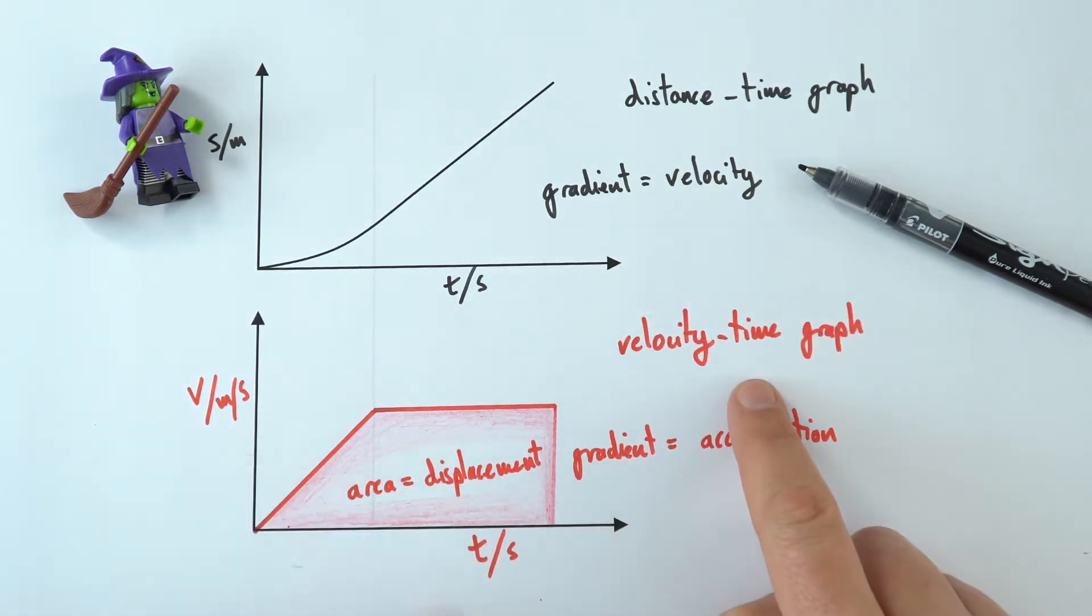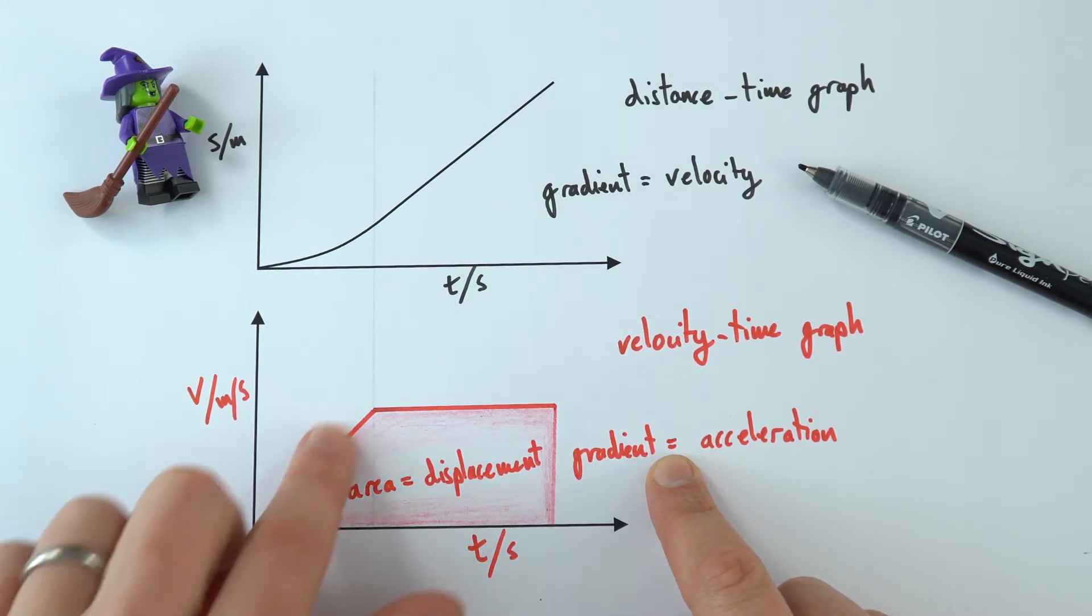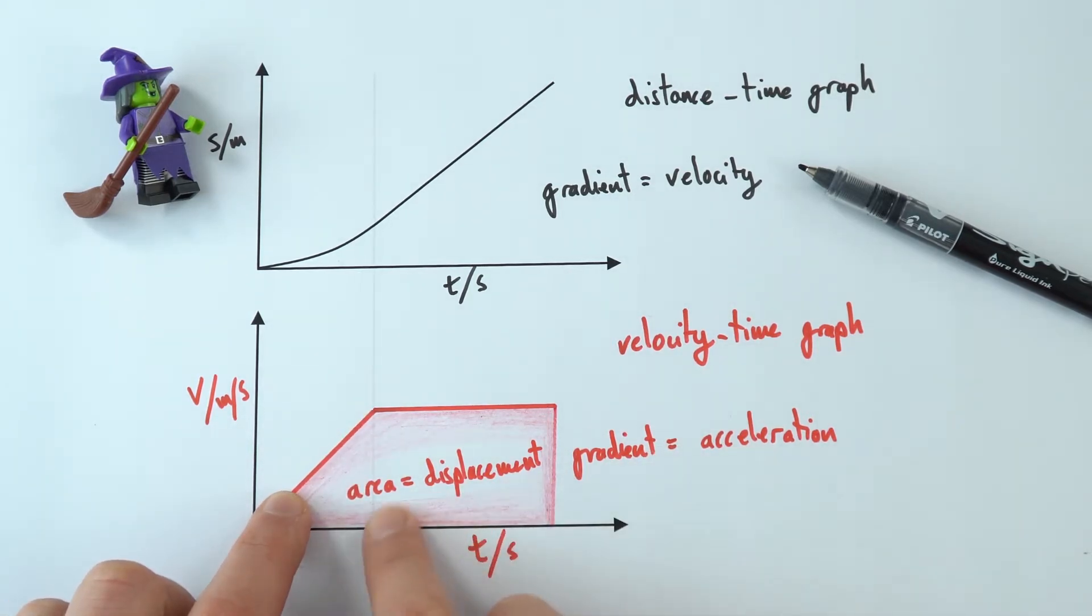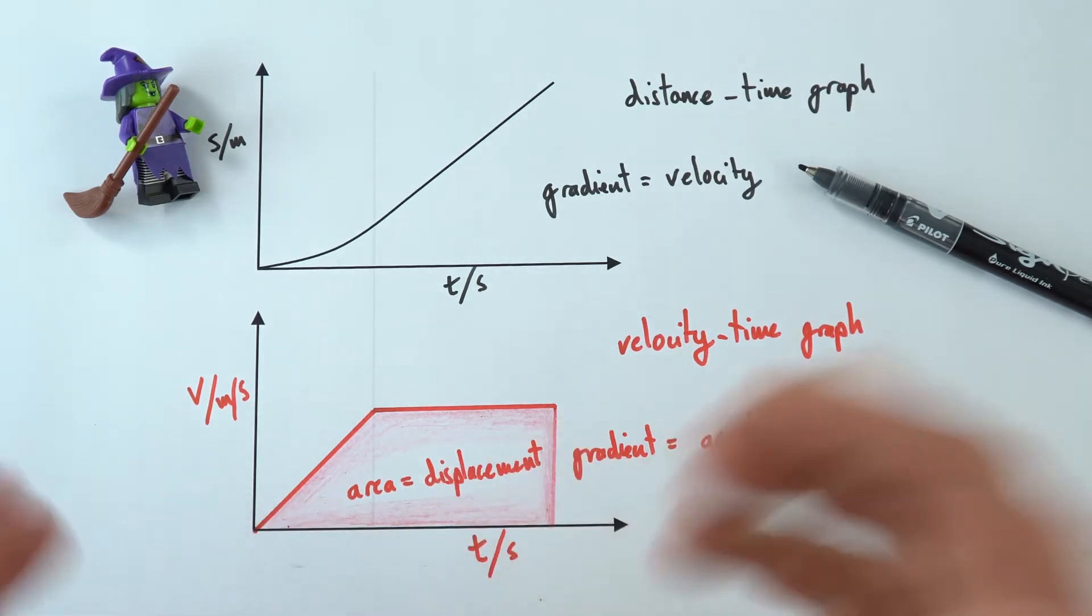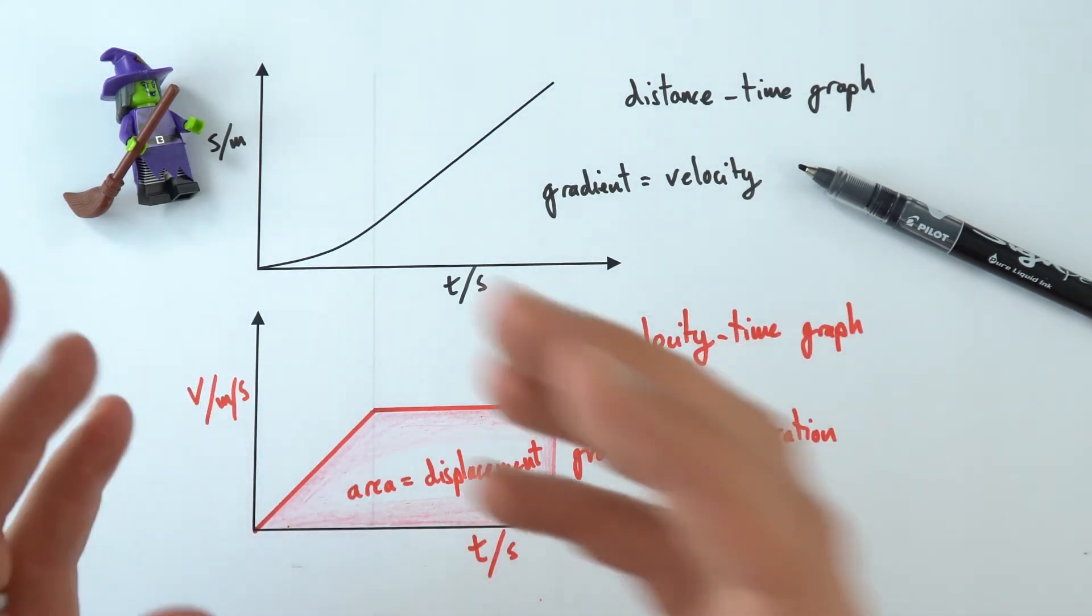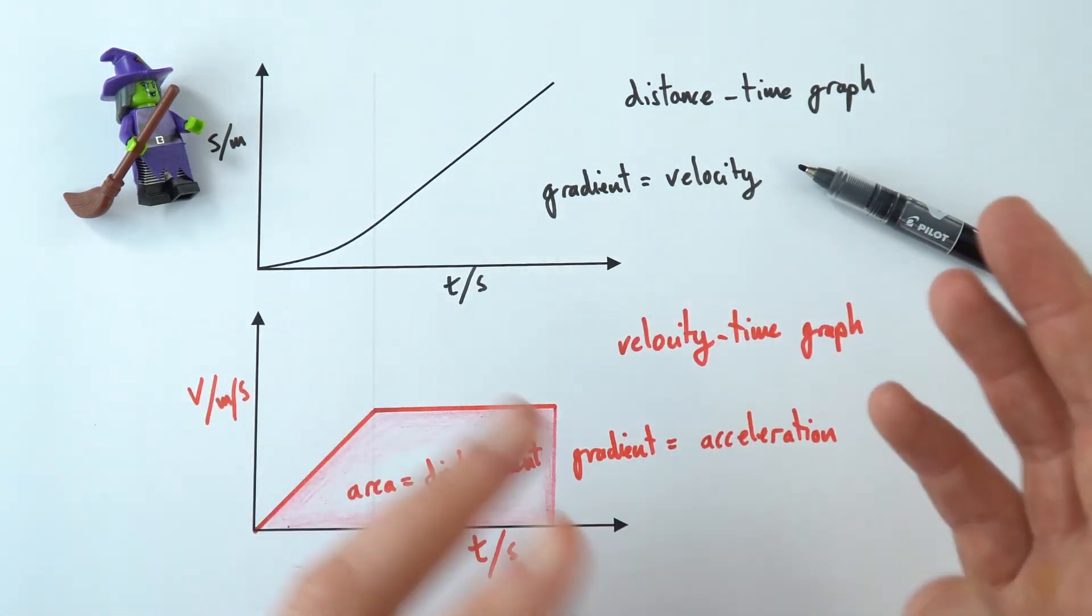Remembering, of course, that when you've got a velocity-time graph, the gradient is now equal to the acceleration. And that tells you about how much it's either increasing or decreasing its velocity. And the area is the displacement, the distance that that object has traveled in a certain direction. So I've got a couple more examples below to actually practice taking some data, reading the graph, and then using that in subsequent calculations.